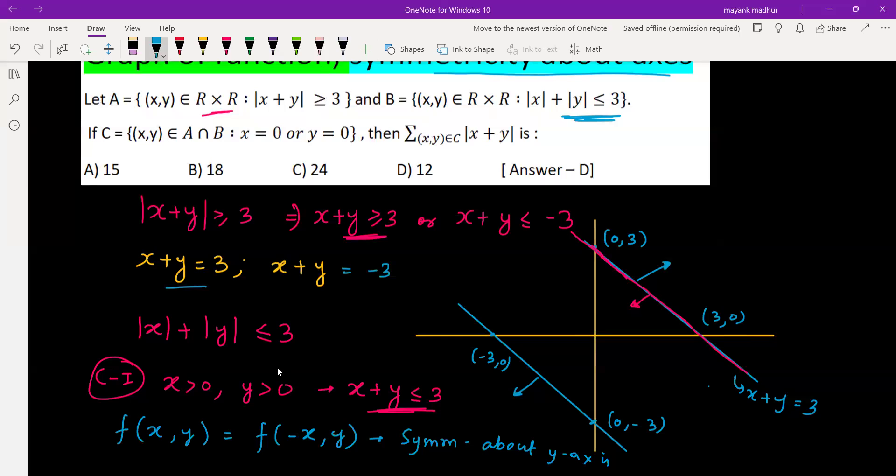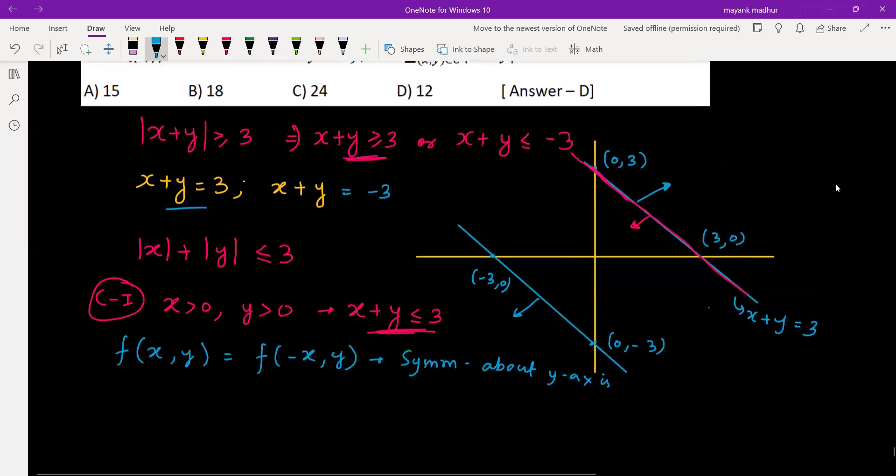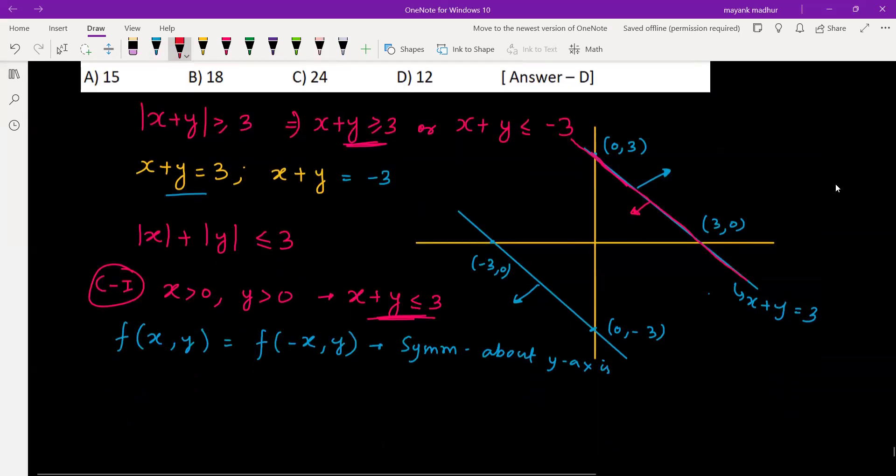So this graph, the straight line which you have drawn, when you take symmetricity about the y-axis, how will it look? This line will only be in the first quadrant because we've taken the condition that x and y both are positive. The symmetricity about the y-axis will be like this.